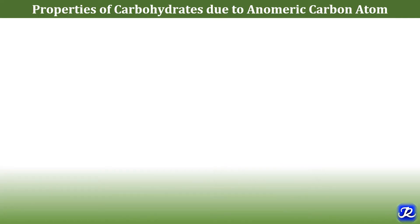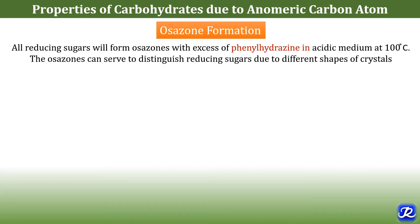The third property of carbohydrates due to anomeric carbon atom is osazone formation with phenylhydrazine. All reducing sugars will form osazones with excess phenylhydrazine in acidic medium at 100 degrees centigrade. Osazones can serve to distinguish reducing sugars due to different shapes of crystals. For example, glucose and fructose form needle-shaped crystals, maltose forms sunflower-shaped crystals, and lactose forms powder-puff crystals.